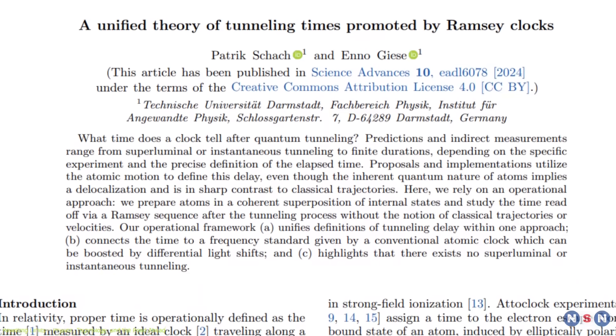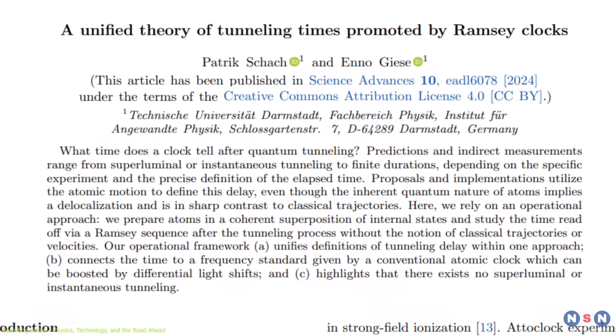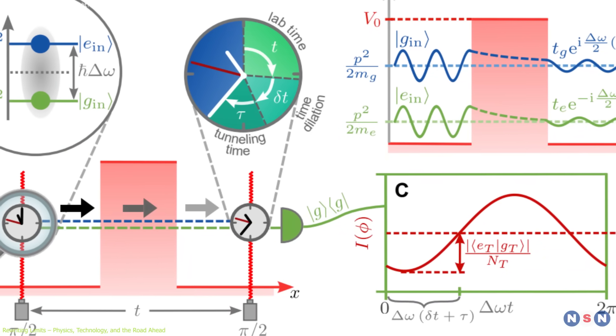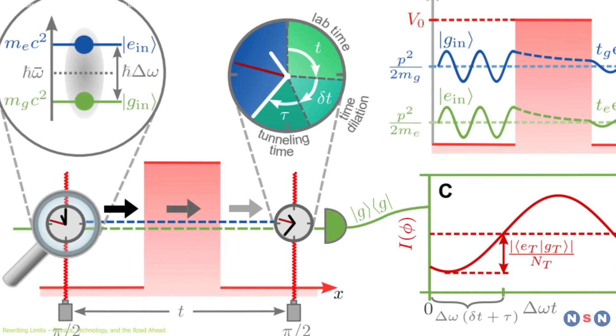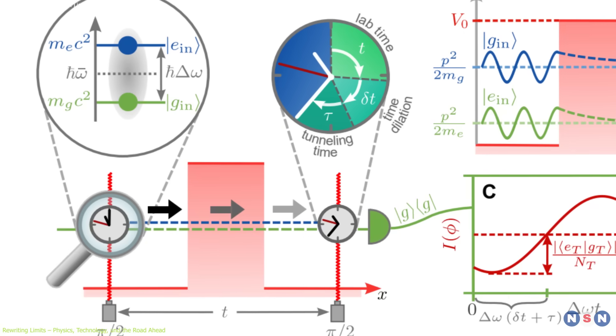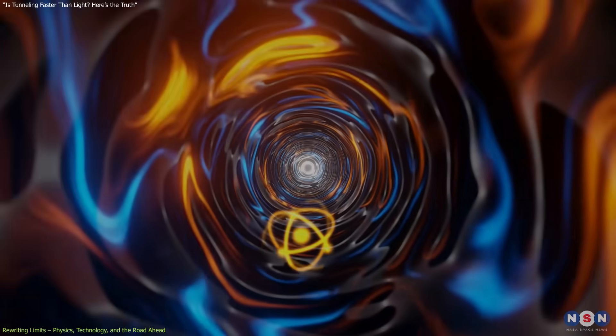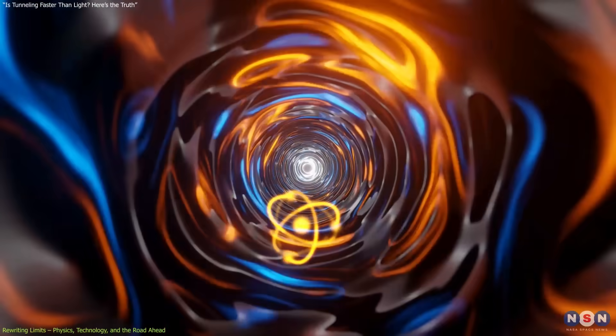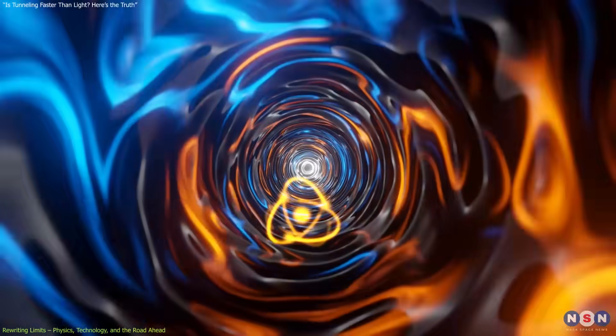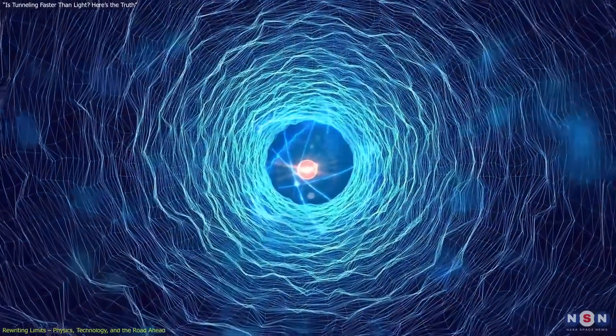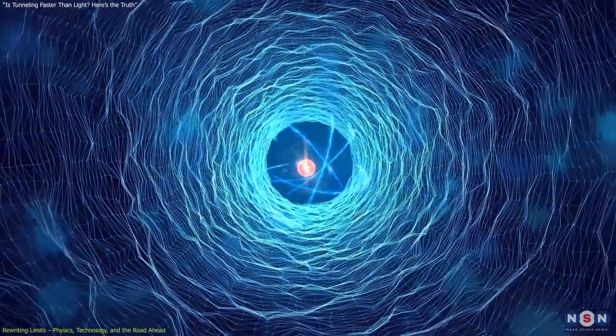Finally, their framework encompasses and refines previous approaches. It integrates Wagner phase times, dwell times, and arrival times into a single coherent language rooted in observable phase shifts. This brings consistency to a domain long riddled with interpretational conflict, and offers experimental physicists a roadmap for designing next-generation tunneling experiments.